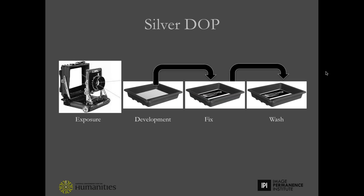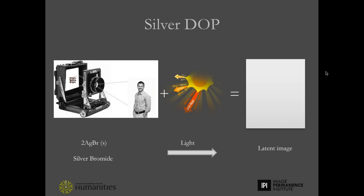During exposure in the camera, a latent image is formed. This light-sensitive material is then placed in a developer bath, which converts the exposed silver halides to metallic silver image particles. The object is still light sensitive, so it needs to be fixed in a chemical called sodium thiosulfate. This breaks up those unexposed silver halides, which are then removed through washing in water.